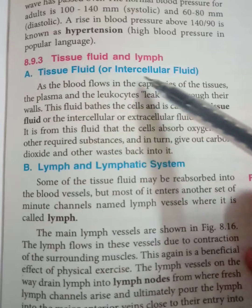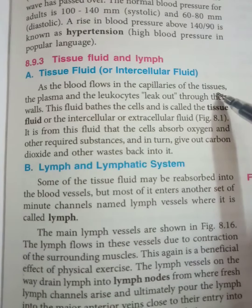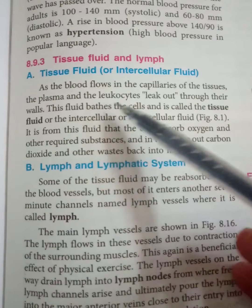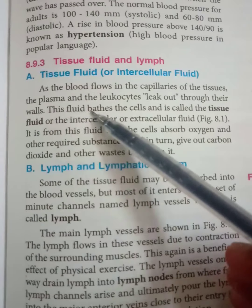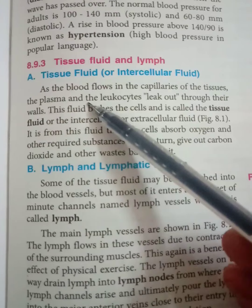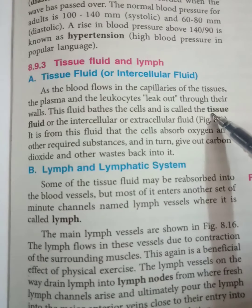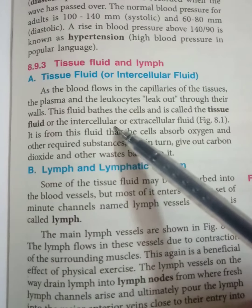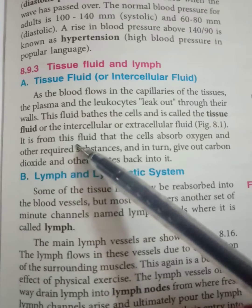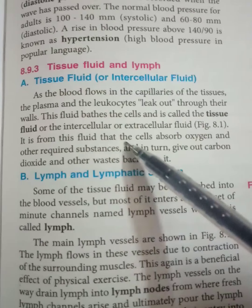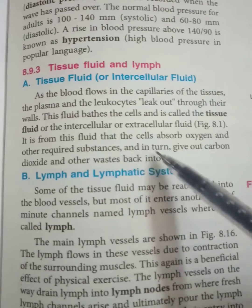Tissue fluid, or intercellular fluid: as blood flows in the capillaries of the tissues, the plasma and leukocytes leak out through their walls. This fluid — plasma plus leukocytes — bathes the cells and is called tissue fluid, intercellular fluid, or extracellular fluid. From this fluid, cells absorb oxygen and other required substances, and in turn give out carbon dioxide and other waste back into it.